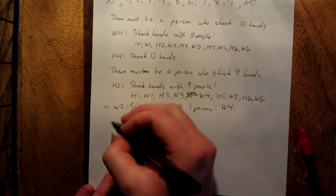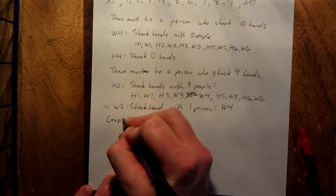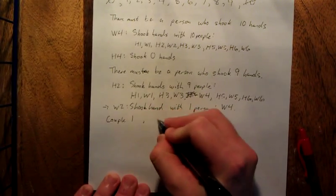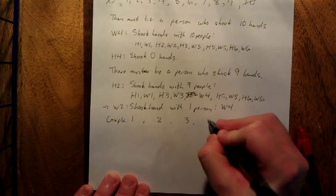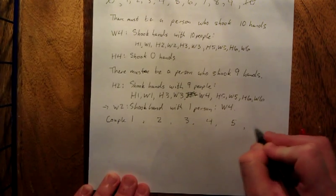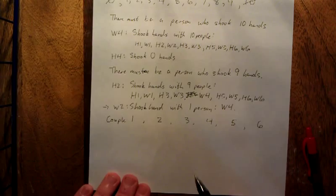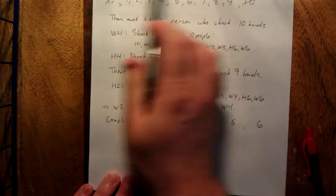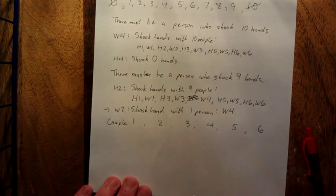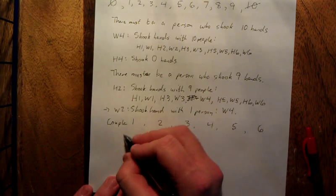So what we're going to do is label down these as couple one, two, three, four, five, and six. So I'm ignoring the numbering from earlier and I'm just calling them their own couples now. The first couple that we analyzed, one shook hands with ten people, the other one shook hands with zero people.